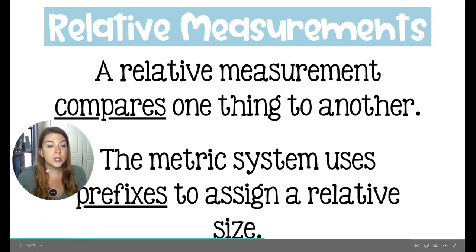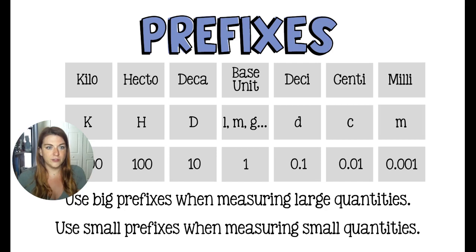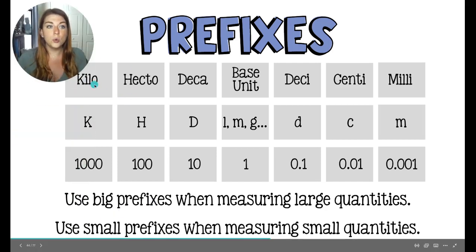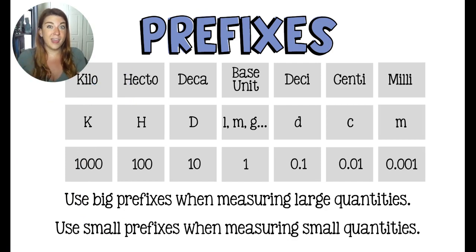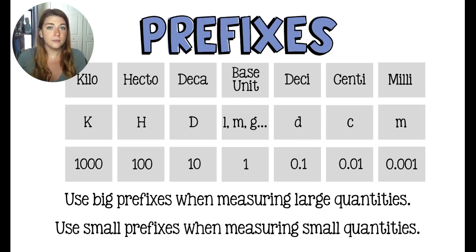The metric system is going to use a prefix to assign the relative size. So like I said, a milliliter is a small liter — a small chunk of a liter. The prefix is going to tell you whether you're measuring something big or something small. Kilo is represented by a K, which represents 1000 of the base units — so a kilogram is 1000 grams. Hecto is represented by H. Deca represents 10 of the base units. The base unit represents one: one liter, one gram, one meter, one candela, one mole, one second, one amp. Deci is one tenth of the base unit. Centi is one hundredth of the base unit. And milli is one thousandth of the base unit.